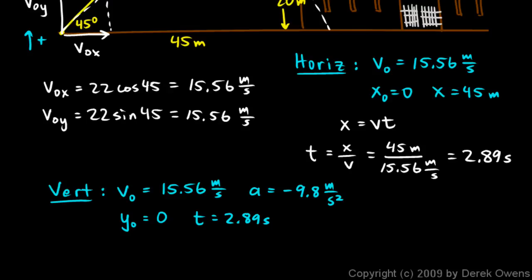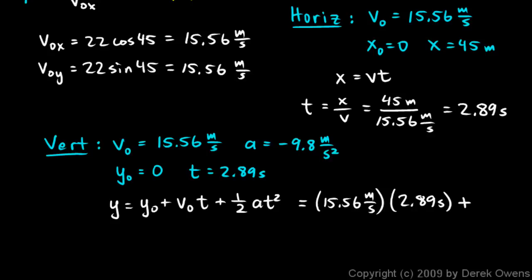y is equal to y0 plus v0t plus one half at squared. So let's put in those numbers. y0 was 0, so v0t, that's just going to be 15.56 meters per second times my time of 2.89 seconds plus, I have to come down here to the next line because I'm about out of room here,